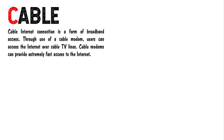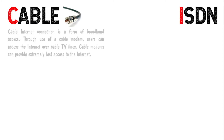Cable internet connection is a form of broadband access. Through use of a cable modem, users can access the internet over the cable TV lines. Cable modems can provide extremely fast access to the internet.